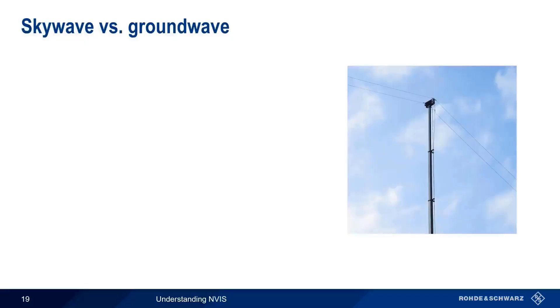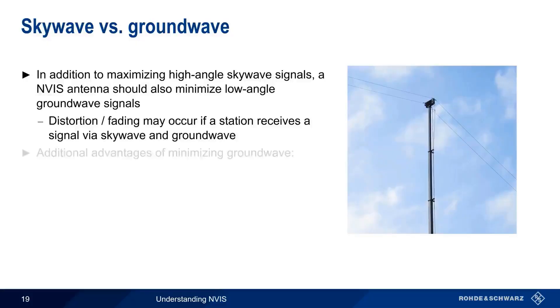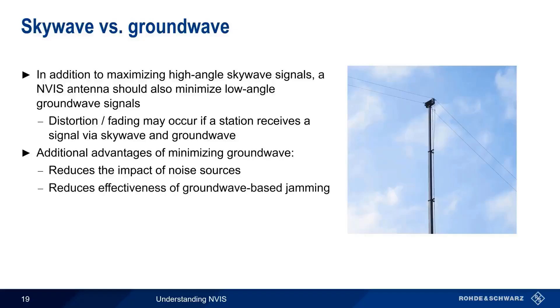One final general note about NVIS antennas. In addition to maximizing high-angle skywave signals, a NVIS antenna should also minimize any incoming low-angle ground wave signals. This is important, because if a station receives a signal via both skywave and ground wave, the interaction of these two signals can lead to destructive interference, distortion, and or fading. Minimizing ground wave signals also has several additional technical and operational advantages. Most noise sources are typically close to the ground, so minimizing ground wave reception can also reduce the impact of these noise sources. Similarly, minimizing the reception of ground wave signals also reduces the effectiveness of ground wave-based jamming. And since a well-designed and properly installed NVIS antenna radiates most of its power upwards, there is much less power that can be detected and located by ground-based radio location or direction-finding systems.